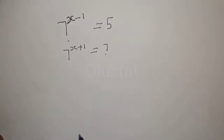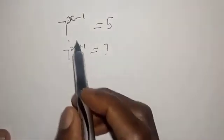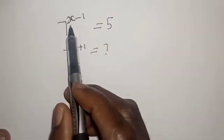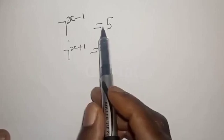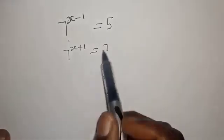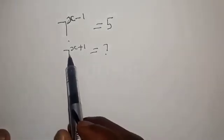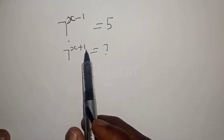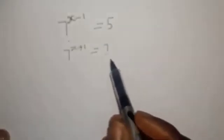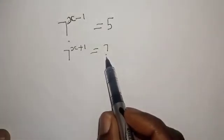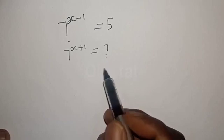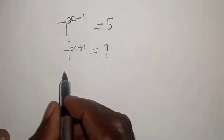Hi everyone, welcome to my class. In today's class we want to look at how to solve this exponential equation: 7 raised to power x minus 1 is equal to 5. Then what is the value of 7 raised to power x plus 1? We do not yet know 7 raised to power x plus 1 — that is what we need to find.